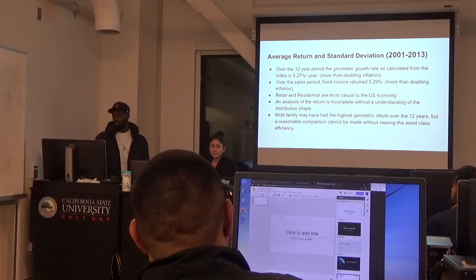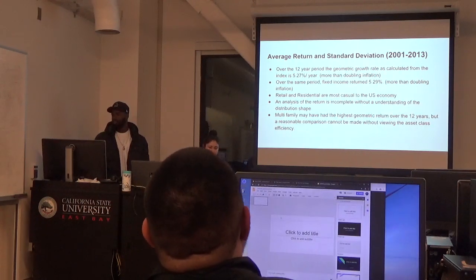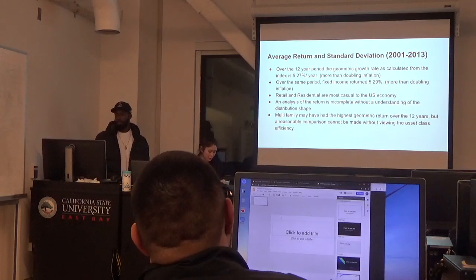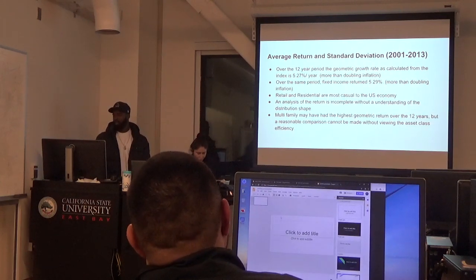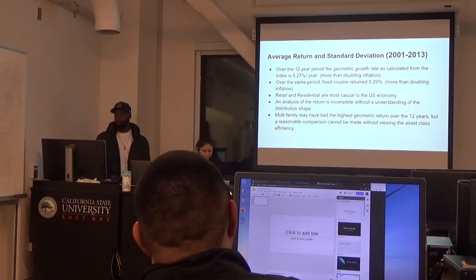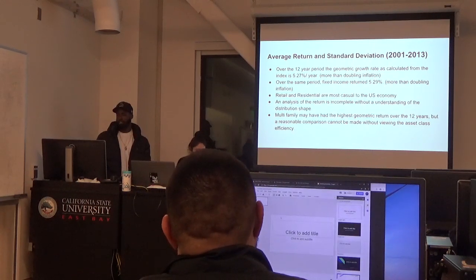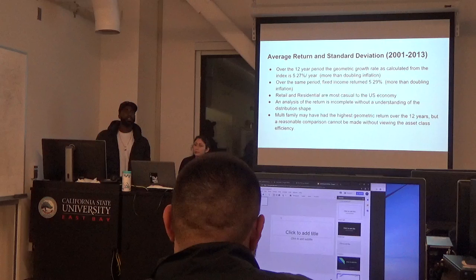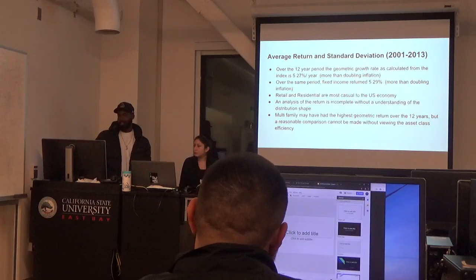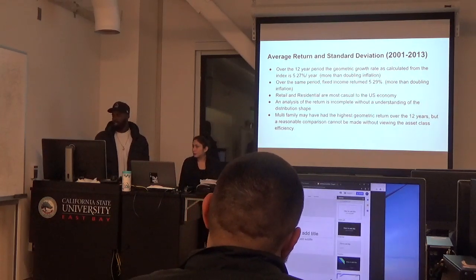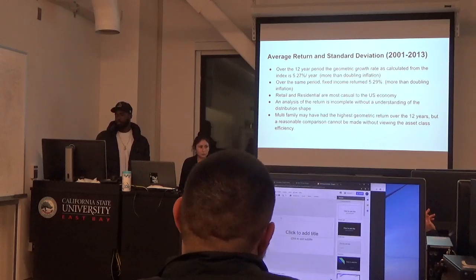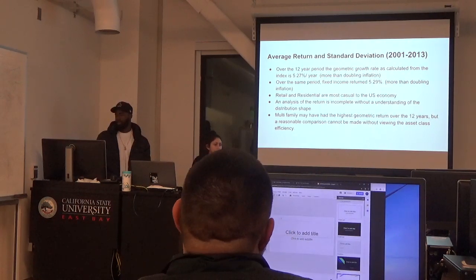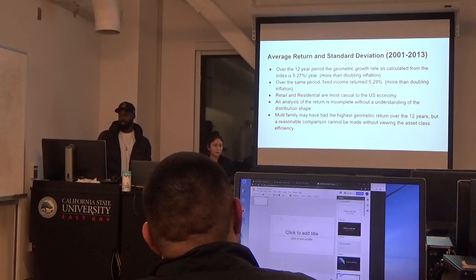I have a return to standard deviation between 2001 and 2013. Over that 12-year period, the signature growth rate — the probability index — was 5.27% for the year, which was more than doubling the inflation. And then in that same period, between 2001 and 2003, there was a 15-income return of 5.29%, and that's also a doubling of inflation.